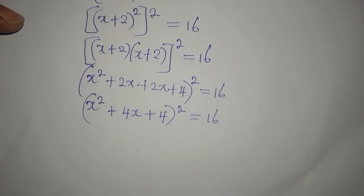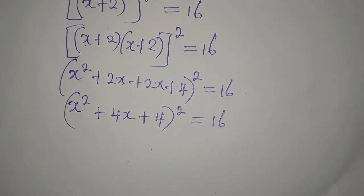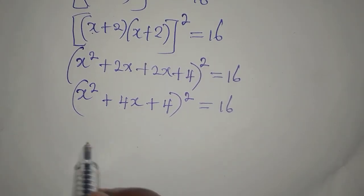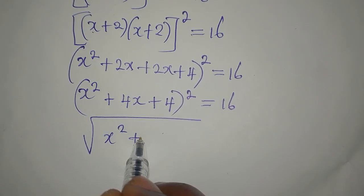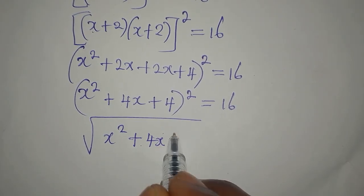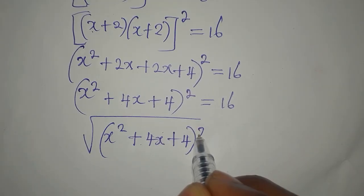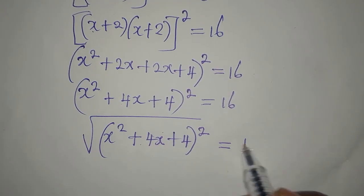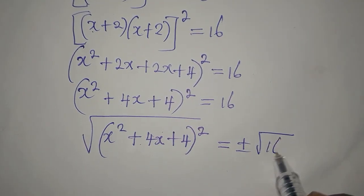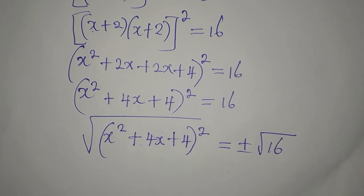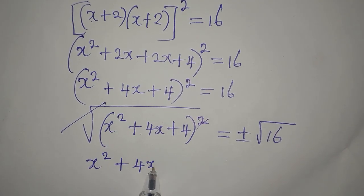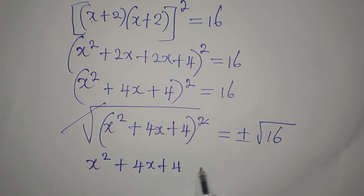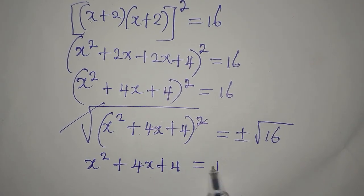Now what can we do? We can take the square root of both sides. The square root of x squared plus 4x plus 4, all squared, is equal to plus or minus the square root of 16. So the square cancels, and x squared plus 4x plus 4 is alone and equal to plus or minus the square root of 16.